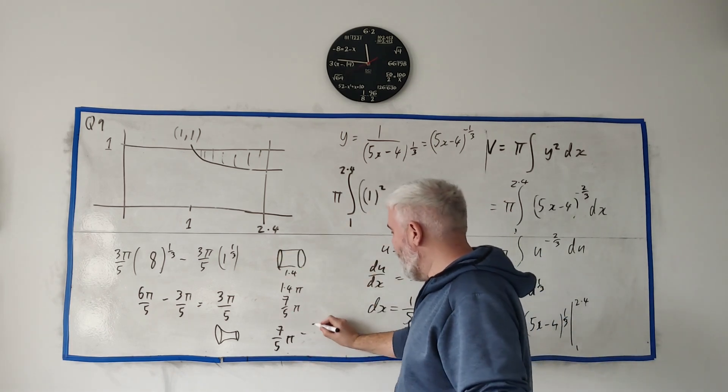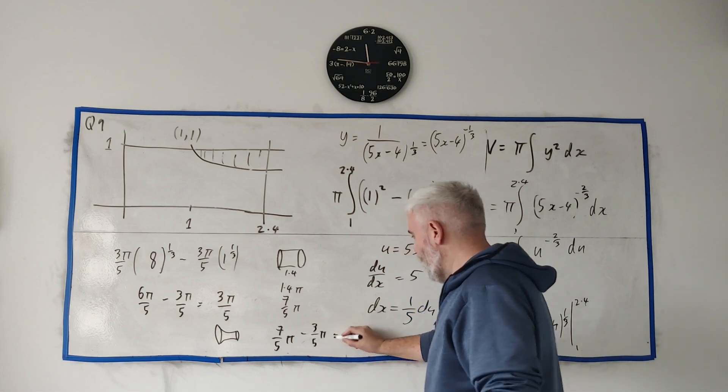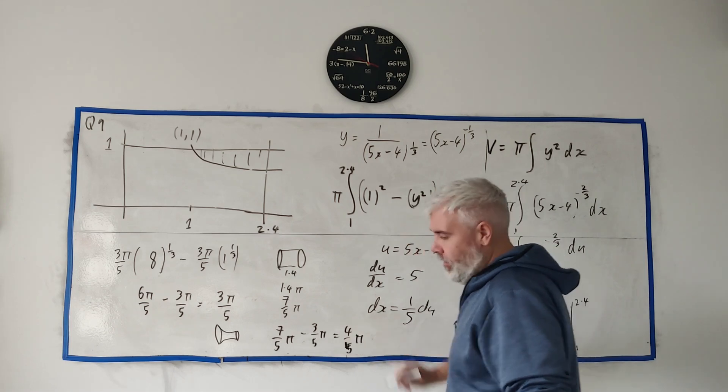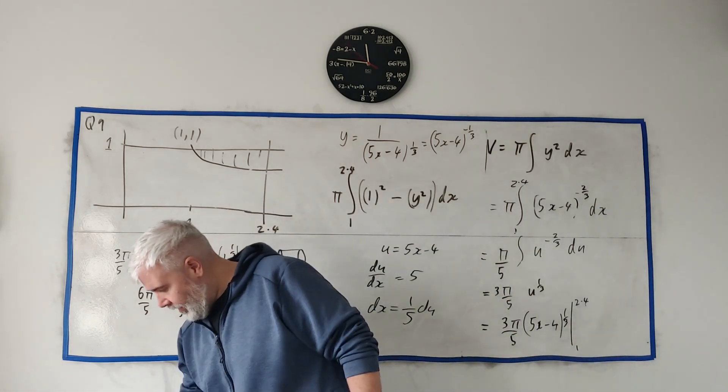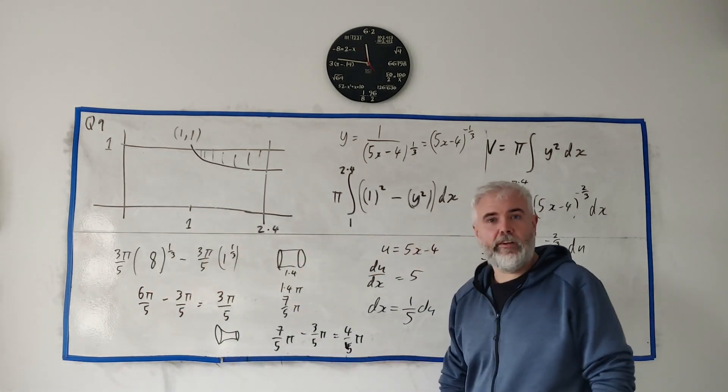So our final answer is 7 over 5 pi minus 3 over 5 pi. So final answer is 4 over 5 pi. Just double check that, that is what I got in my notes. Yeah, 4 over 5 pi.